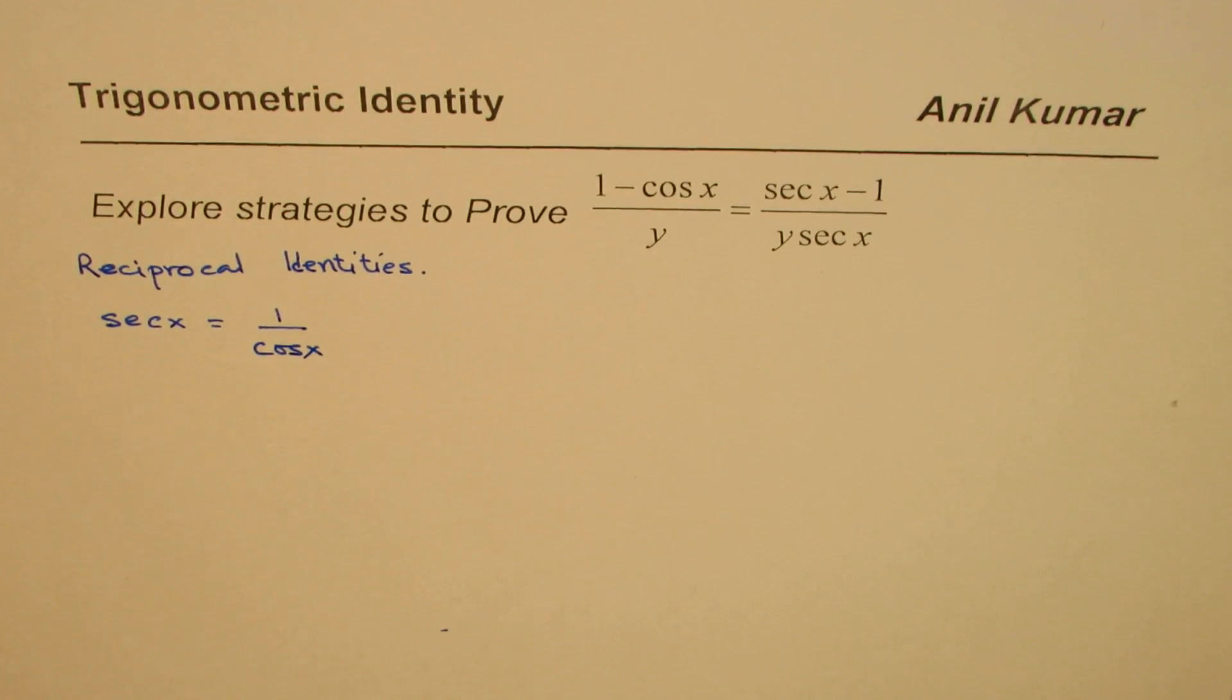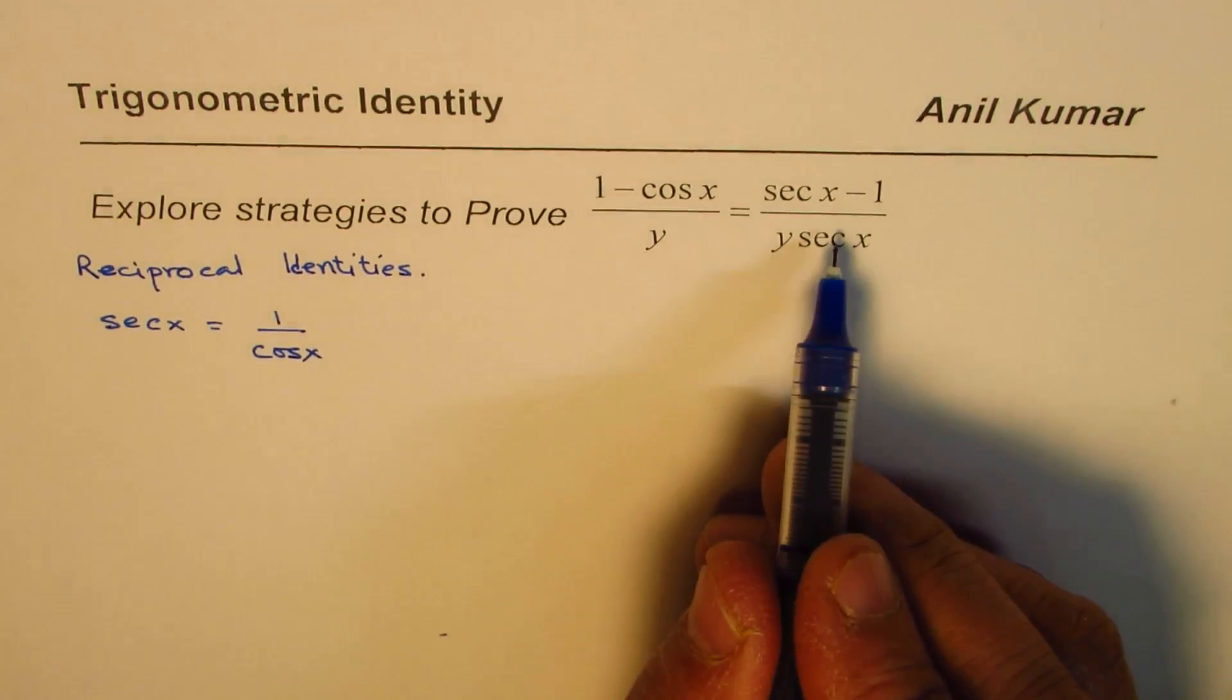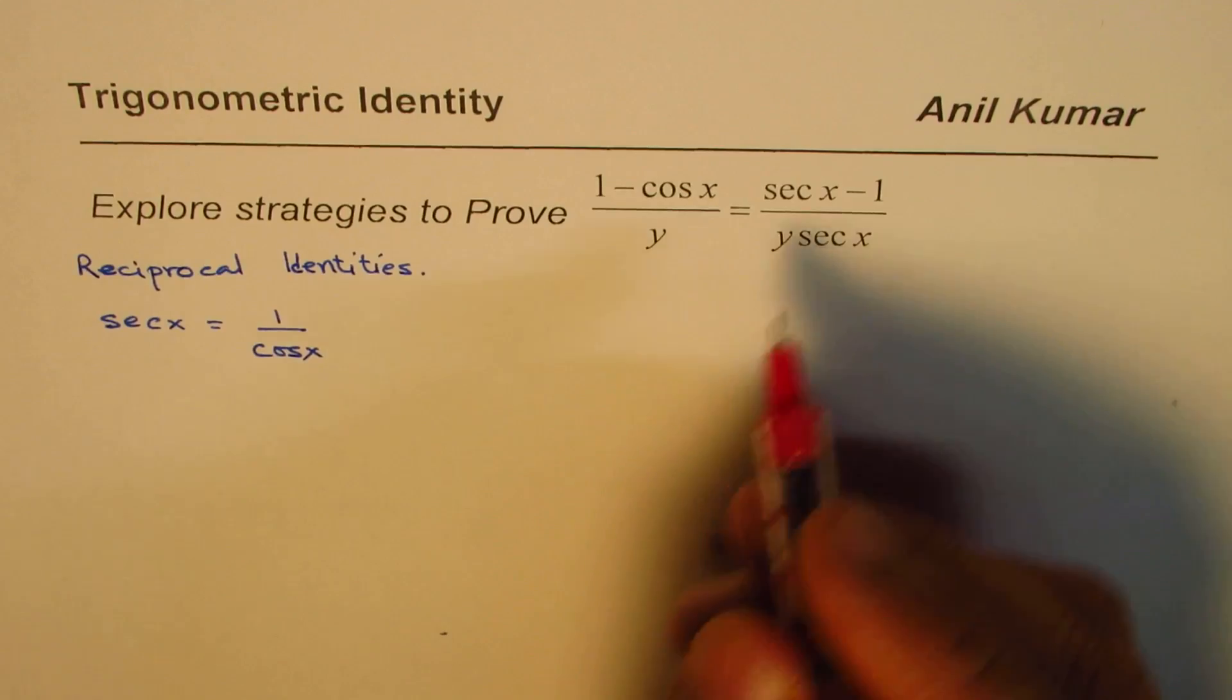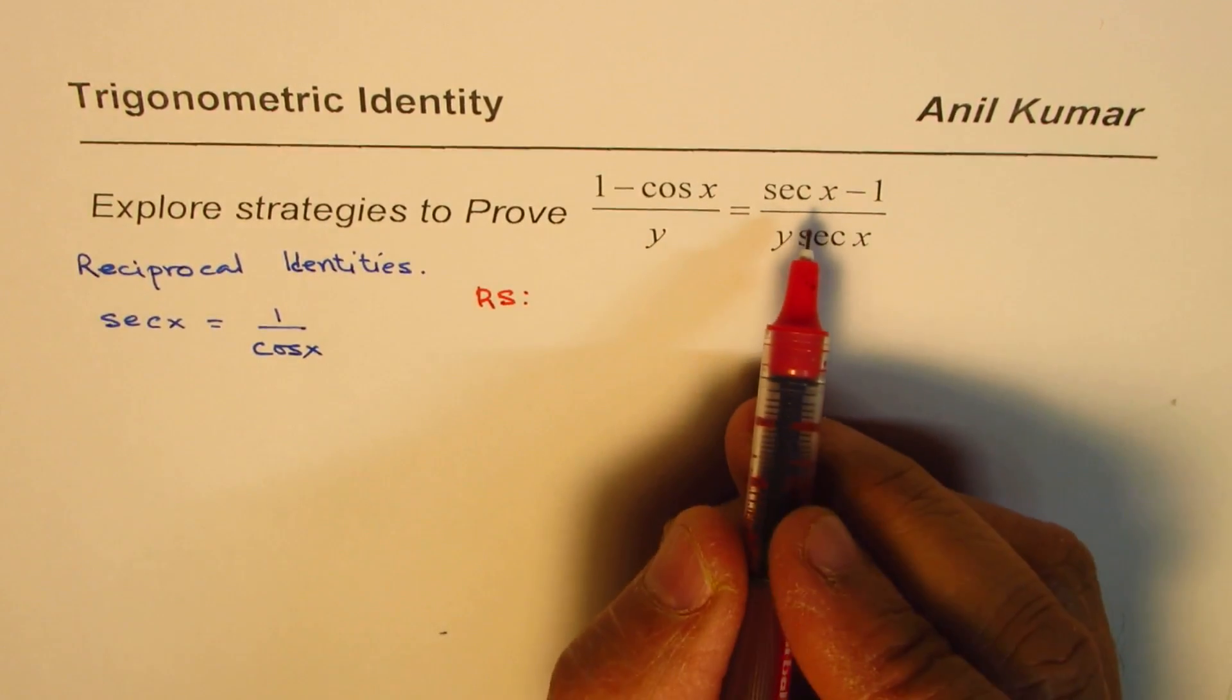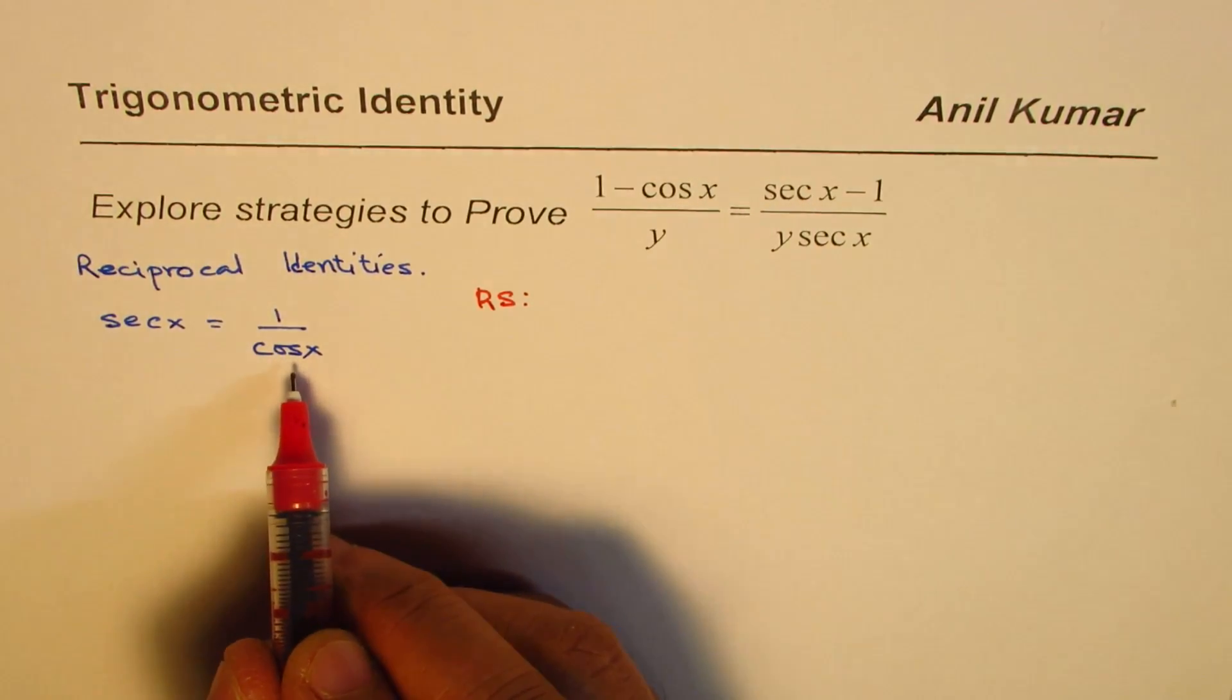This is the identity which we are going to use in the current video to prove the identity. For us, the right side is sec x, so we'll begin with the right side and write sec x as 1/cos x.